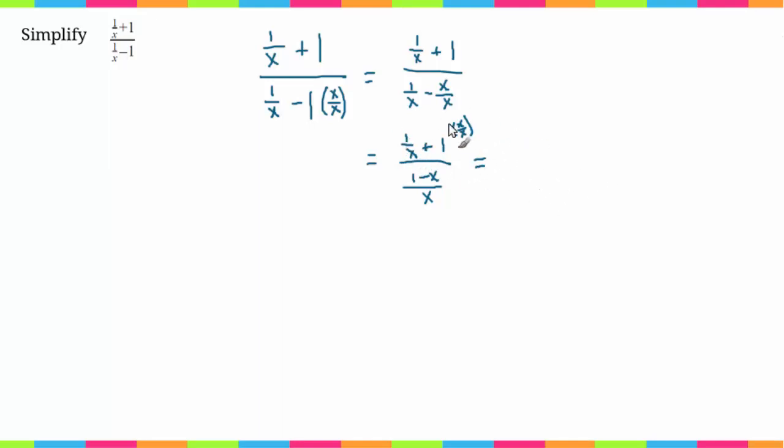In the numerator I'm going to have 1 over x plus x over x, over 1 minus x over x. Now I can combine these numerators, so I'm going to have 1 plus x over x, over 1 minus x over x.